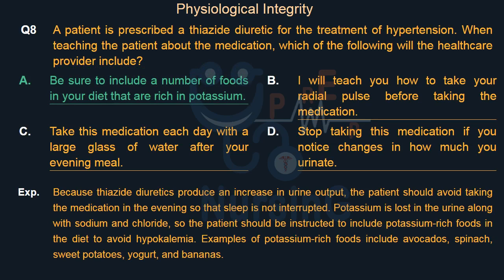Because thiazide diuretics produce an increase in urine output, the patient should avoid taking the medication in the evening so that sleep is not interrupted. Potassium is lost in the urine along with sodium and chloride, so the patient should be instructed to include potassium-rich foods in the diet to avoid hypokalemia. Examples of potassium-rich foods include avocados, spinach, sweet potatoes, yogurt, and bananas.